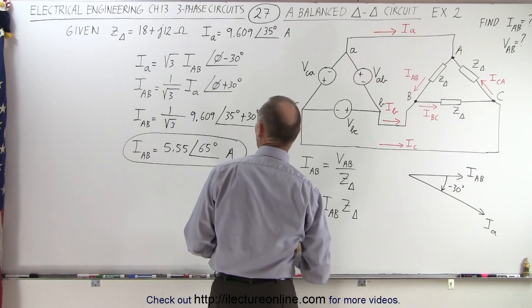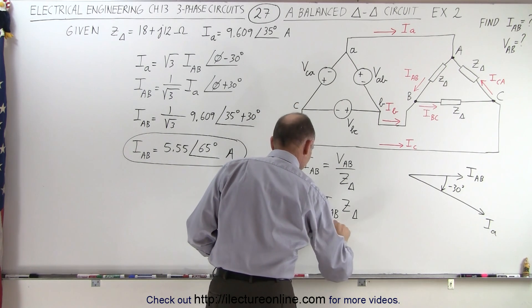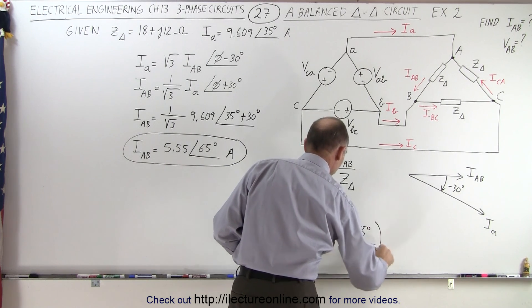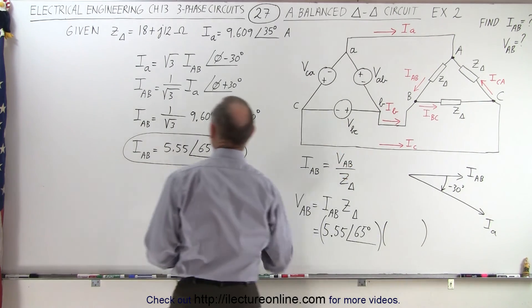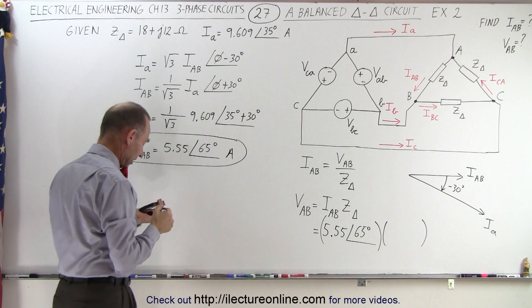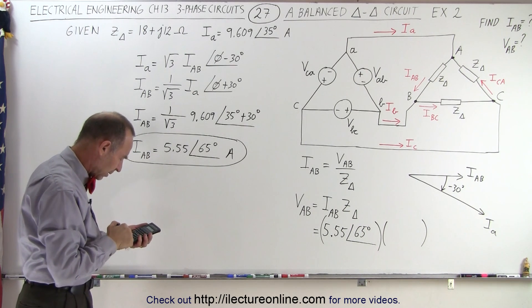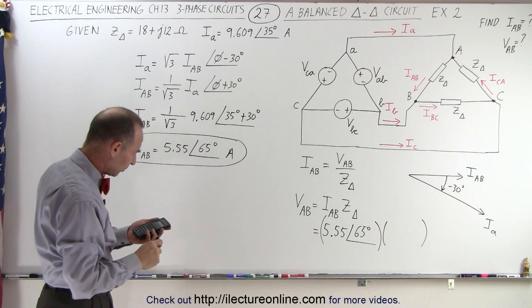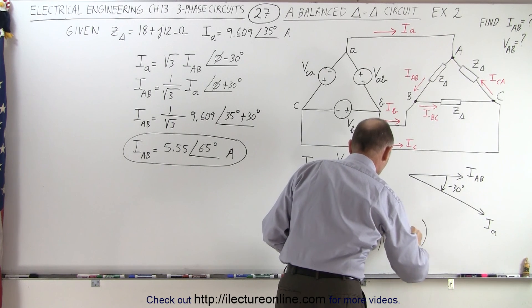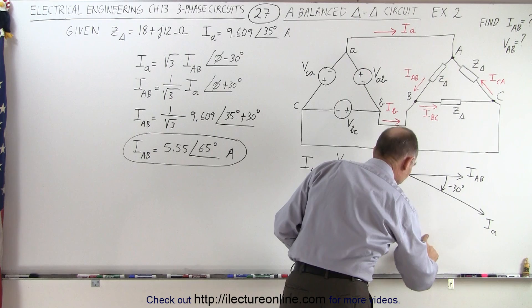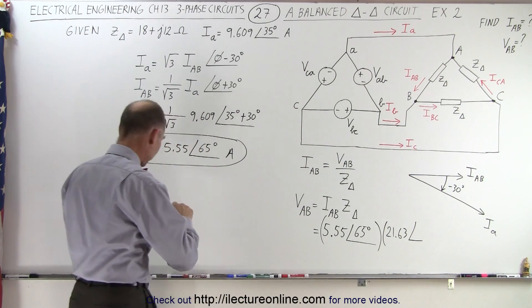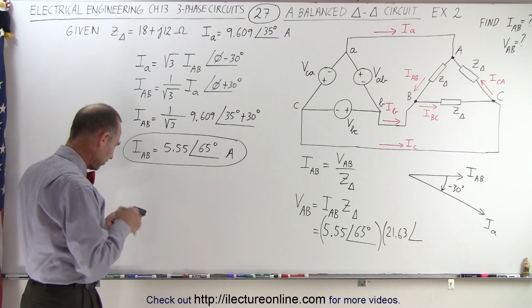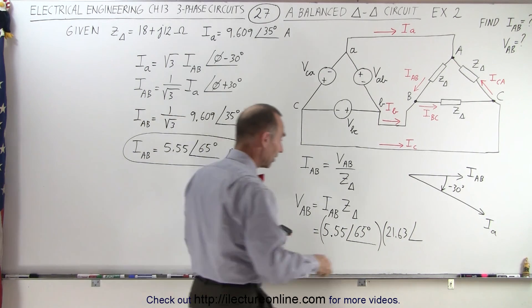So, this is going to be equal to IAB, which is 5.55 with a phase angle of 65 degrees, and we're going to multiply that times, and we have to convert this into magnitude and phase angle. So, 18 squared plus 12 squared, take the square root of that, gives us 21.63 with a phase angle of, so we take 12 divide by 18, that's 2 thirds, take the inverse tangent of that, which is 33.69 degrees.